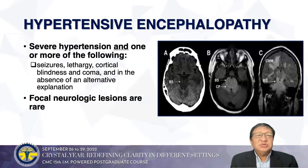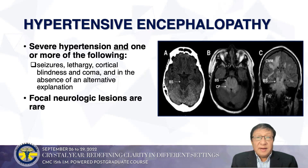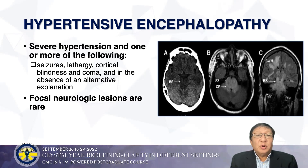Severe hypertension may present with seizures, lethargy, cortical blindness, and coma. In the absence of an alternate explanation, this is termed hypertensive encephalopathy. This can lead to posterior reversible leukoencephalopathy syndrome (PRES), where these symptoms are present and vasogenic edema develops in the posterior brain regions. Focal neurologic lesions are rare, but if BP is not reduced promptly, hemorrhages and infarctions can cause permanent neurologic deficits.